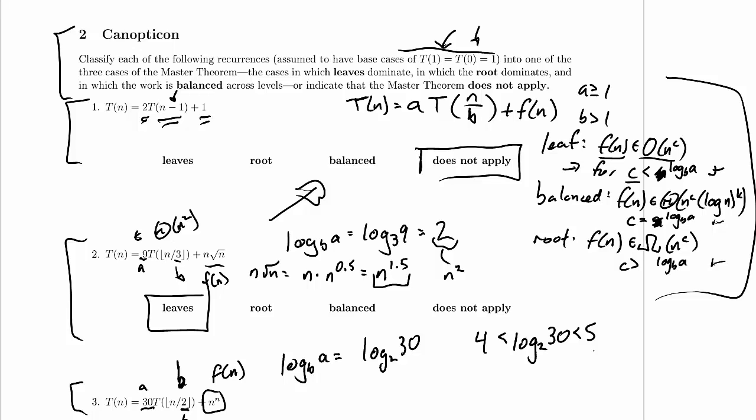Now we need to ask how f of n, n to the n, compares to n to the 4 point something. And the answer is n to the n is huge. It is absolutely going to dominate n to the 4 point something, it's going to dominate n to the 5, it's going to dominate n to the 6, it's going to dominate any polynomial. So what we know is that n to the n is in big omega of n to the c for c equals 5. It's also in big omega of n to the c for any constant c, but what we care about is a c that is larger than log base b of a, and sure enough, this is a c that's larger than log base b of a.